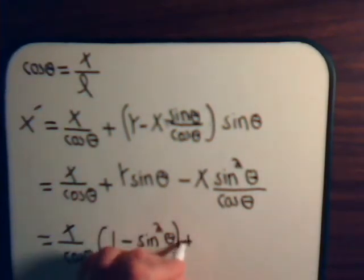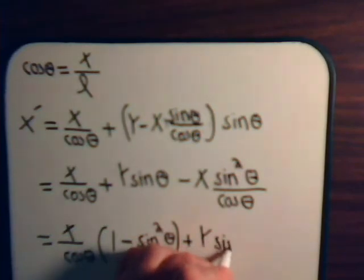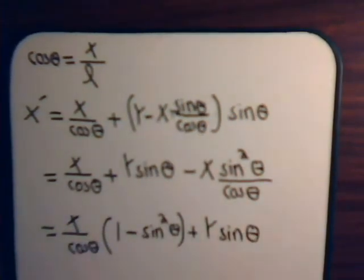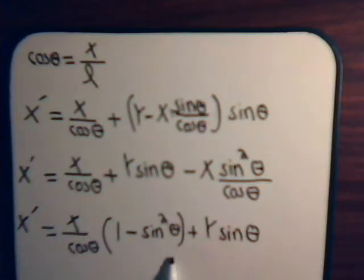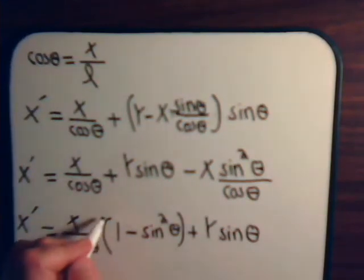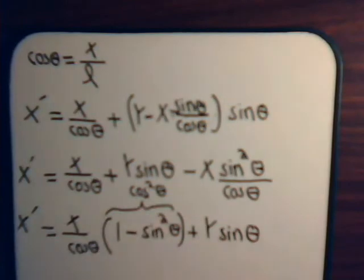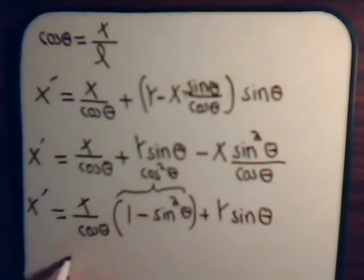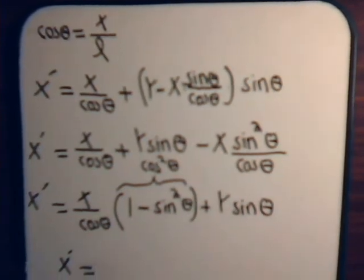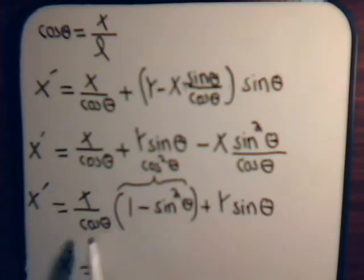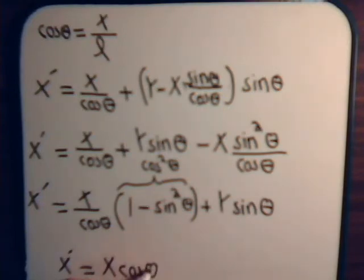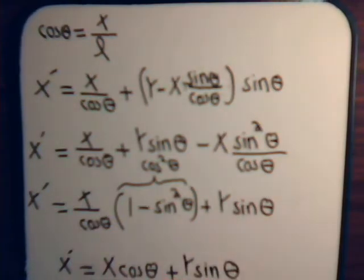Now, 1 minus sine squared of theta is the cosine squared of theta. So what we have is x prime equals x divided by cosine of theta times cosine squared of theta, which gives us x times cosine of theta, plus y times sine of theta. So there's the expression: x prime equals x times cosine of theta plus y times sine of theta.